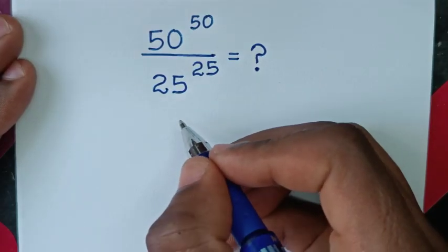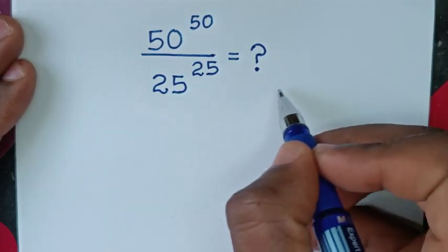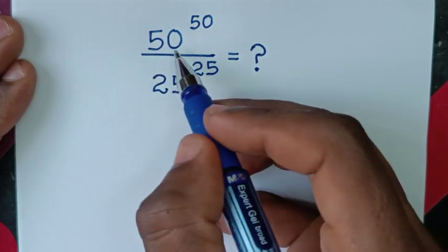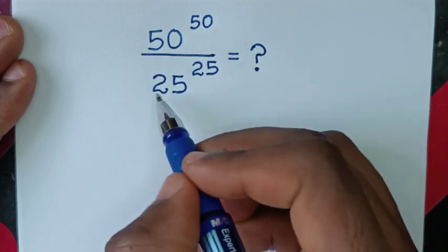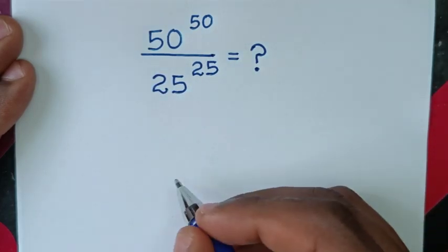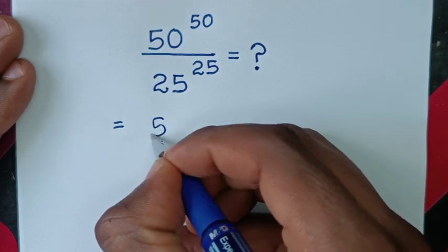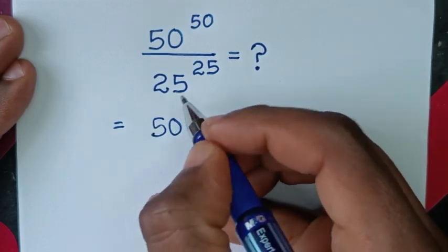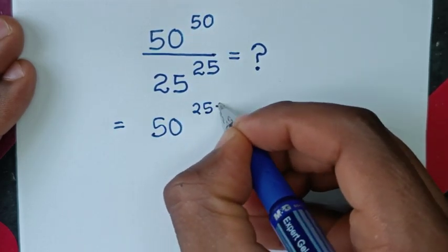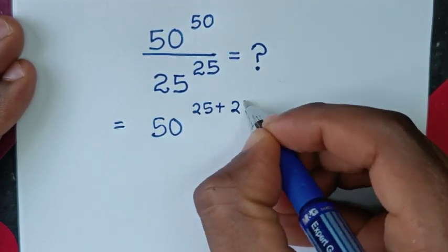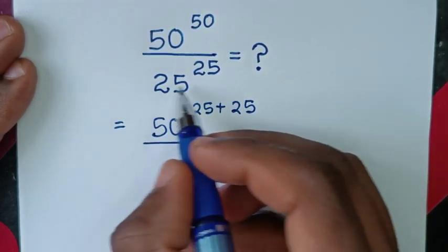Hello, you are welcome to solve this math problem which is 50 power 50 over 25 power of 25. It will be equal to 50 power of 50, which is the same as power of 25 plus 25, over 25 power of 25.